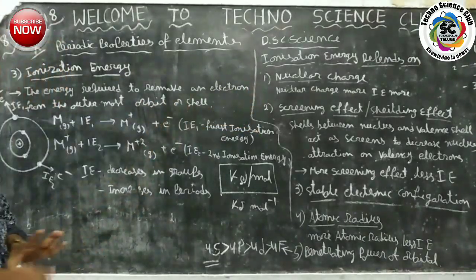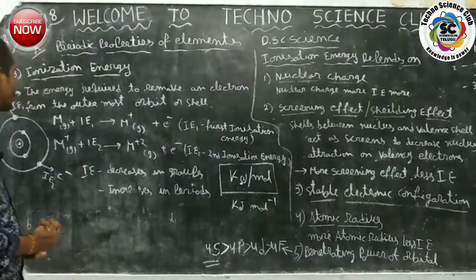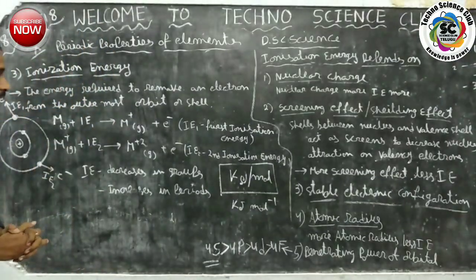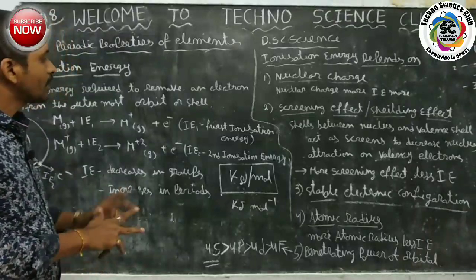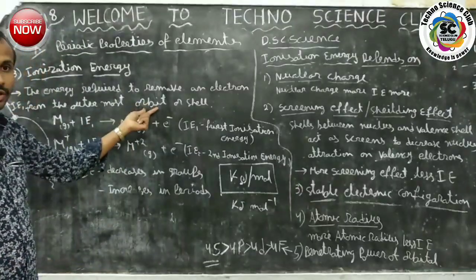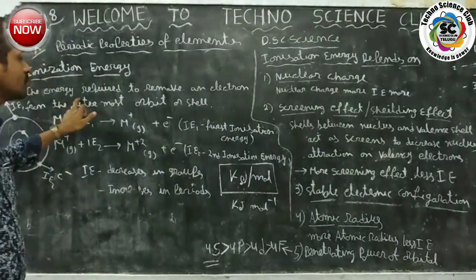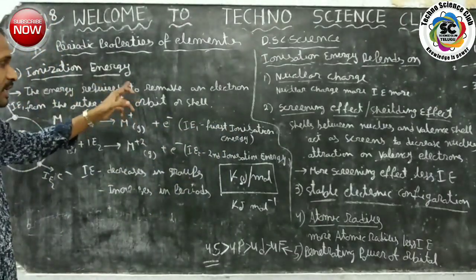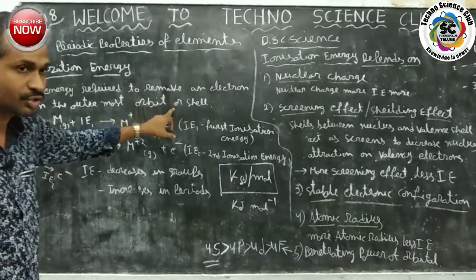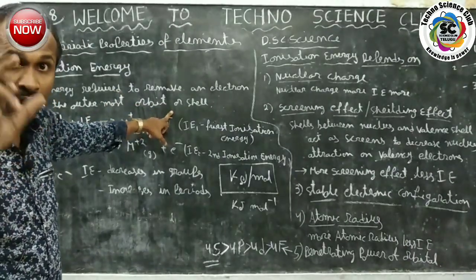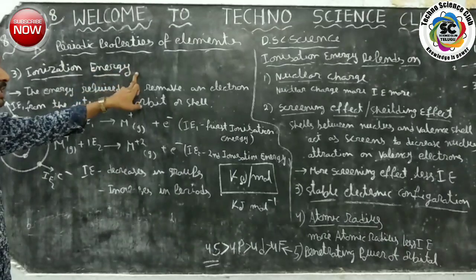an atom in its gaseous state. The energy required to remove one electron from the outermost shell of a gaseous state atom is called ionization energy. How much energy is required to remove an electron from its outermost shell — that required energy is called ionization energy.